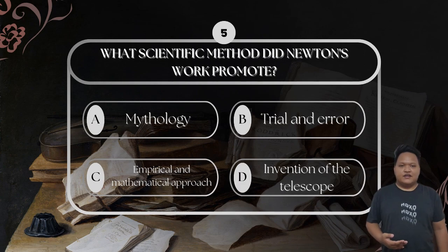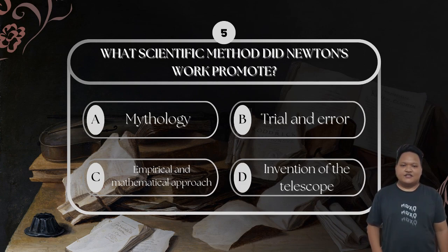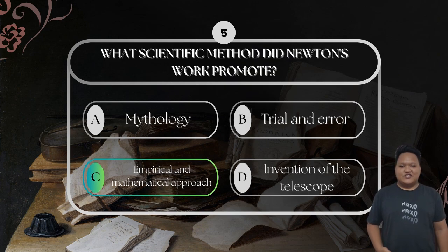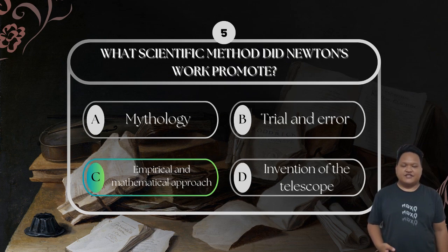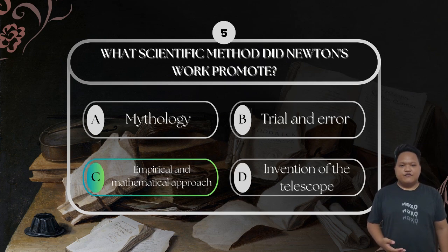For question number five: what scientific method did Newton's work promote? The correct answer is the empirical and mathematical approach. Newton emphasized the importance of observation, experimentation, and mathematical reasoning. This empirical method became a standard in scientific research, moving science away from speculation and towards evidence-based conclusions.